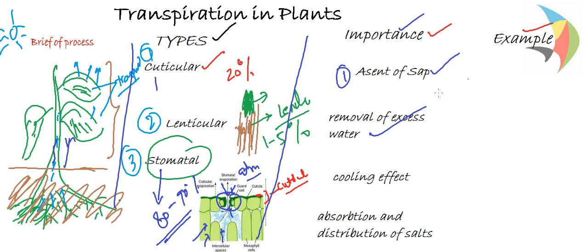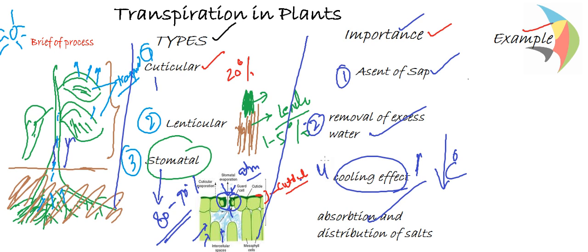The third importance is the cooling effect — transpiration helps to regulate the temperature of the plant, since evaporation reduces the temperature, giving a cooling effect to the plant. The fourth importance is absorption and distribution of salts, where salts are continuously absorbed by the roots and the continuum of water from the lower portion to the upper portion helps in distribution of salts and minerals throughout the plant. These are the four major importances of the transpiration process.